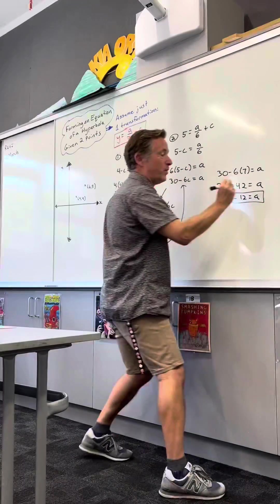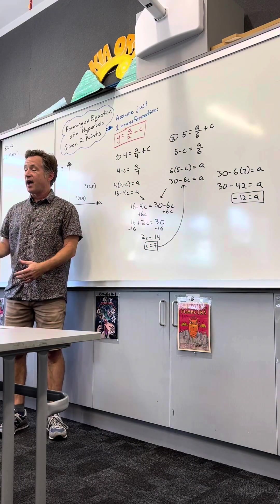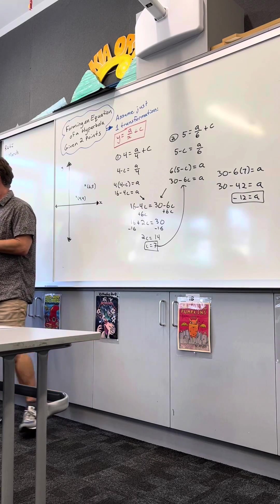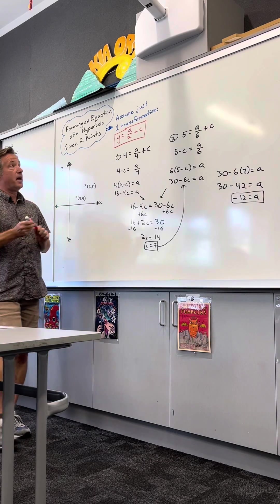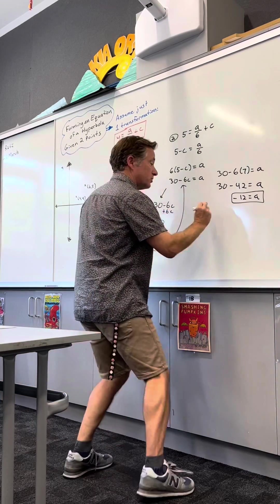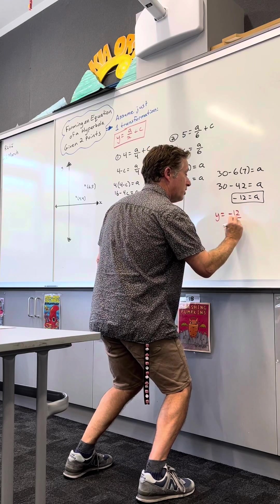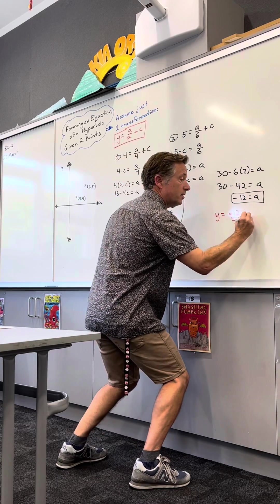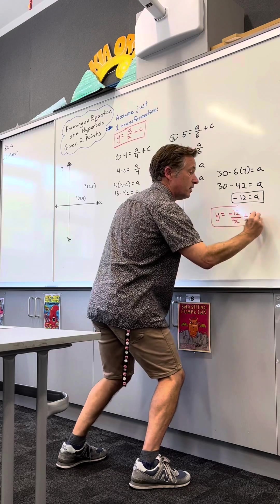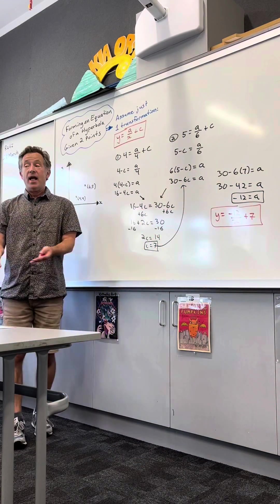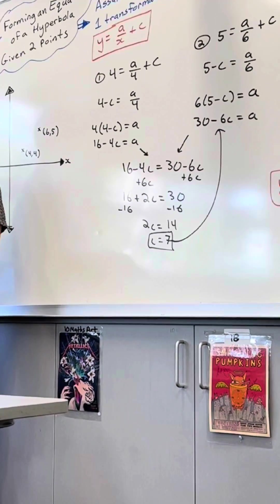And just like we've been doing, once I get my key features of that graph, I rewrite my equation. And here's my general form. So I've got y equals negative 12 over x plus 7. All right, and that is the true equation that goes through those two points.